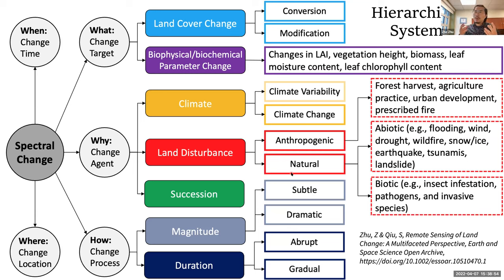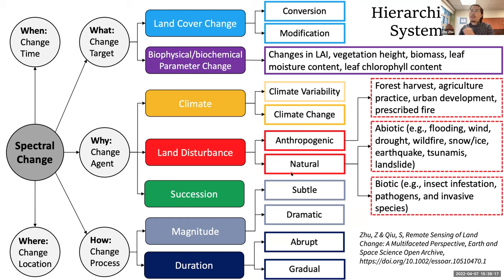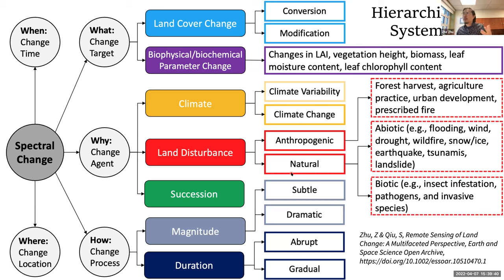Most of the time we use spectral change — that's what we have in remote sensing — to get the when (change time) and the where (change location). We can also infer what has been changed; we call this the change target. Most of the time we're trying to do land cover change, and sometimes we use land cover as a proxy for land use. In this category there is land cover conversion and also land cover modification, where modification doesn't necessarily change the cover type but changes the condition of the cover. The broader target change includes biophysical and biochemical parameter changes — things like LAI, tree height, biomass, leaf moisture, and leaf chlorophyll content.